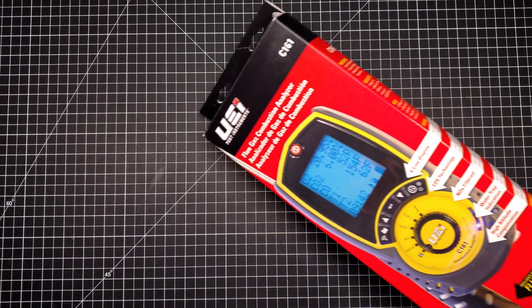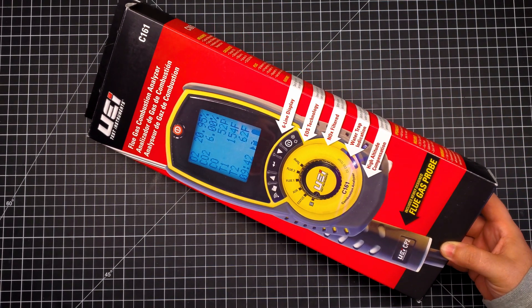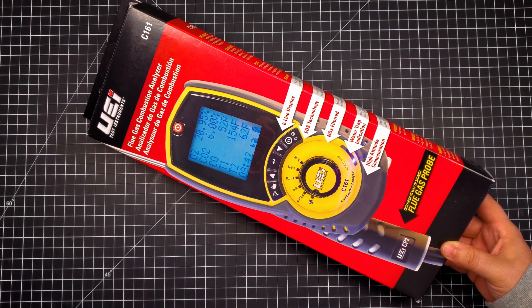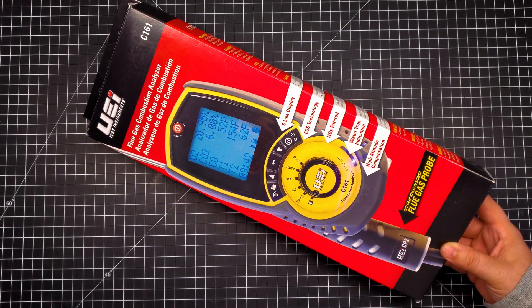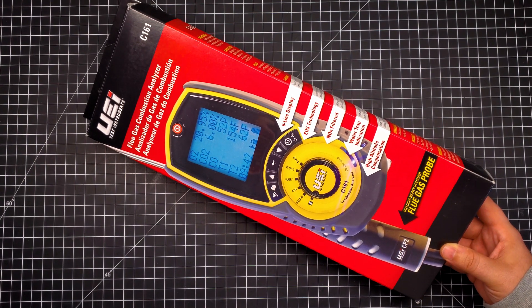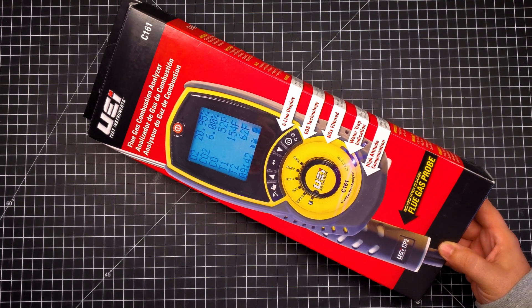I'm Mr. Ecosystem and today we're going to be looking at the UEI C161 Combustion Analyzer. Depending on which part of the world you're from, you may know this unit as the Kane 258 Combustion Analyzer.